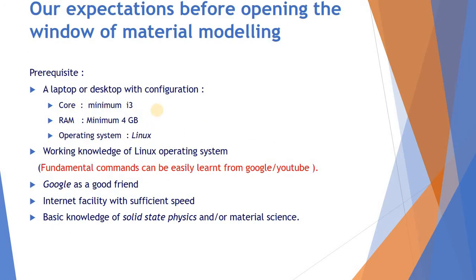Our expectations before opening the window of material modeling: a candidate who wants to learn material modeling must have a laptop or desktop with a minimum configuration of at least an i3 processor, RAM minimum 4GB, and basic knowledge of the Linux operating system. If not, fundamental commands can be easily learned from Google or YouTube video lectures. Also, the candidate must be a good friend of Google, and internet facility with sufficient speed will also be important.